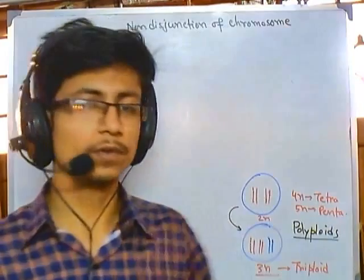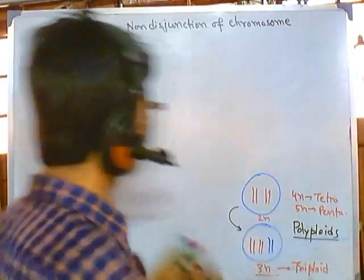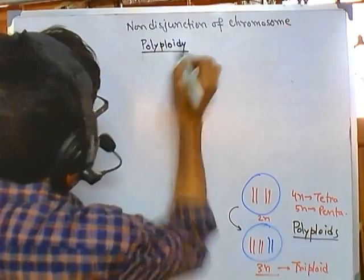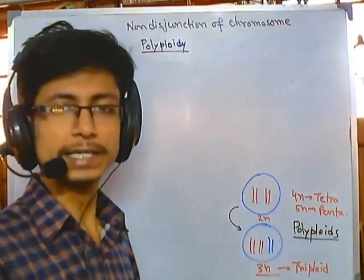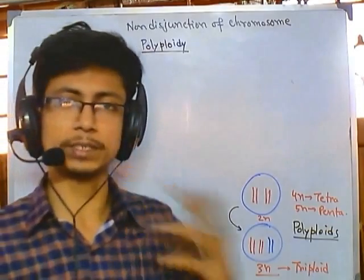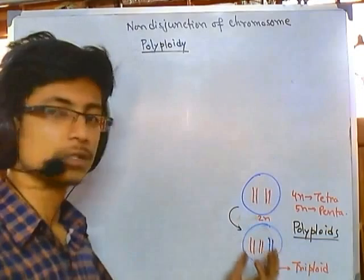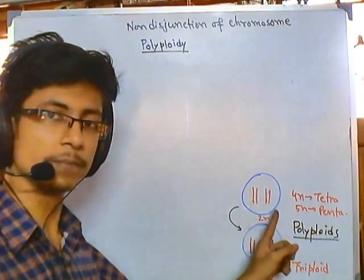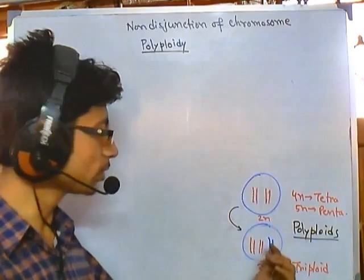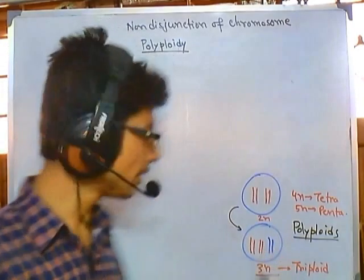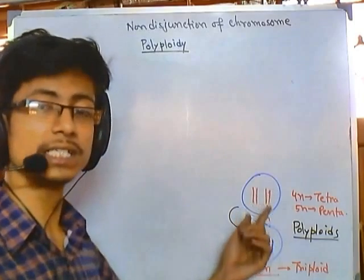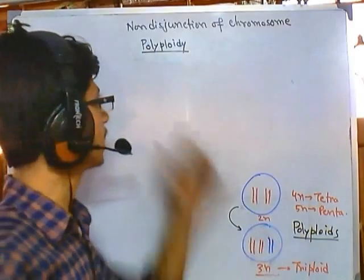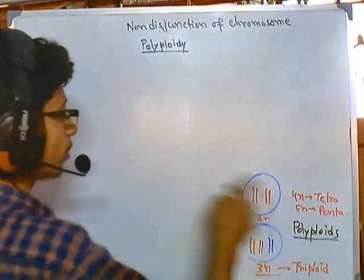Welcome back. Let's talk about a brief overview of polyploidy. Polyploidy means the number of chromosomes increments in sets. If there are two sets of chromosomes usually present inside the cell, the set number will be increased. So if a cell's nucleus has two sets of chromosomes — a diploid or 2n situation — after non-disjunction, a new set is added, making it 3n. This type of non-disjunction outcome is termed polyploidy.